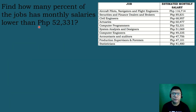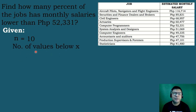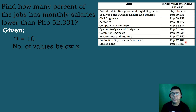Let's solve our next example. This time, let's find how many percent of the jobs have a monthly salary lower than 52,331. The number of jobs N is equal to 10. The values less than 52,331 are: 51,069; 49,335; 47,756; 47,101; and 41,480. Counting these, we have 5 jobs with a monthly salary lower than 52,331.